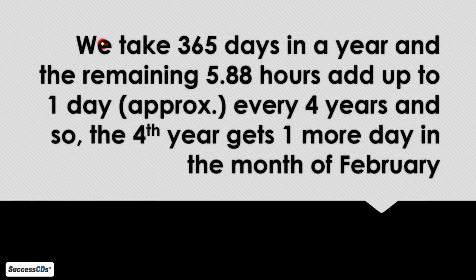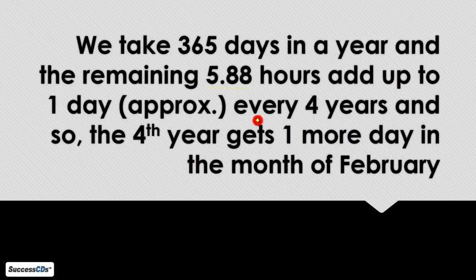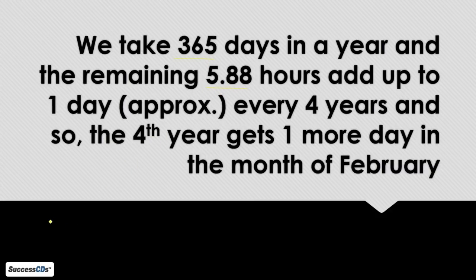But what do we do? We take 365 days in a calendar year, and the remaining 5.88 hours add up to one day approximately every four years. So the fourth year gets one more day in the month of February. We approximate 5.88 hours to 6 hours. So 6 hours per year multiplied by 4 years gives us 24 hours.